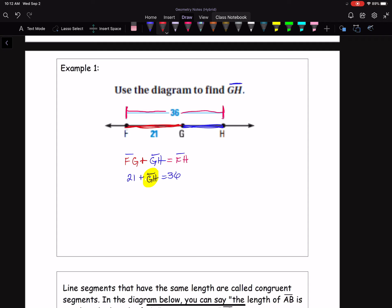And you will get the answer, GH equals 15. And if there's a unit, if it says like 21 inches or 36 inches, make sure you include that in your answer. No units here though, it looks like. So we can just say GH is 15.